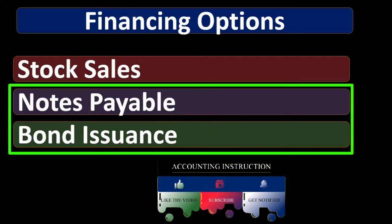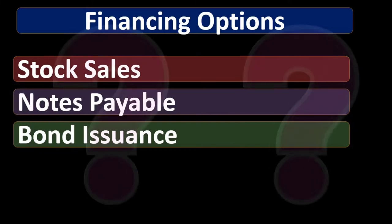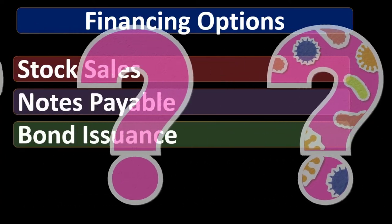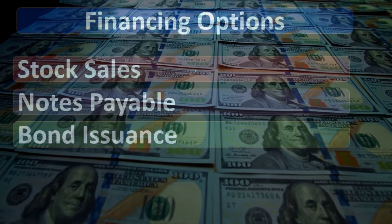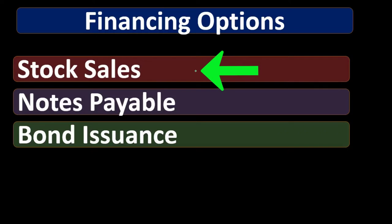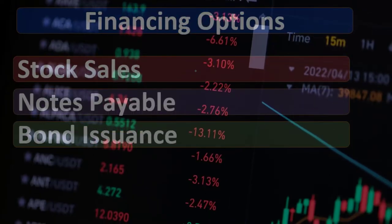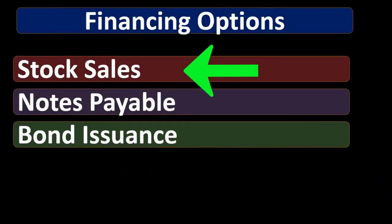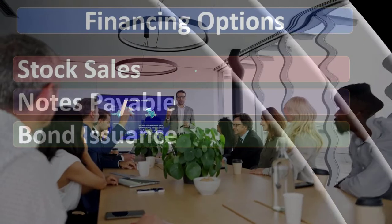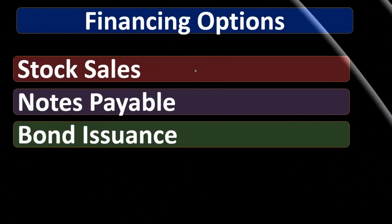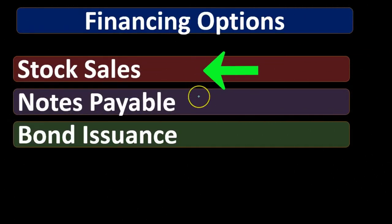The options include issuing stock, taking out a notes payable or loan, or issuing bonds. When thinking about bonds and notes payable, comparing them to each other gives us an idea of the characteristics of each and why we would use them. Stock options give us the ability to issue stock and therefore give some ownership in the company in exchange for capital. However, issuing stock is only available to a corporation, and the downside is that you're giving away voting power and claims to future revenue generation.